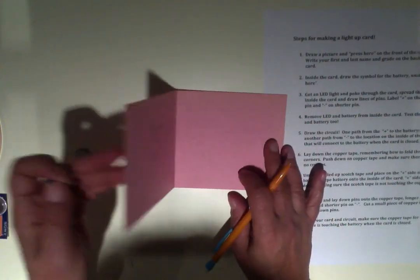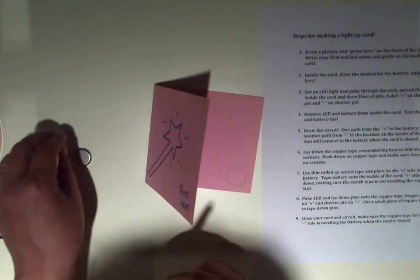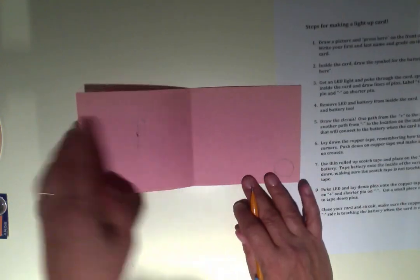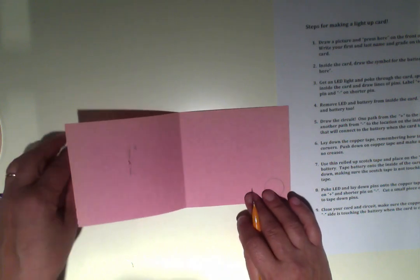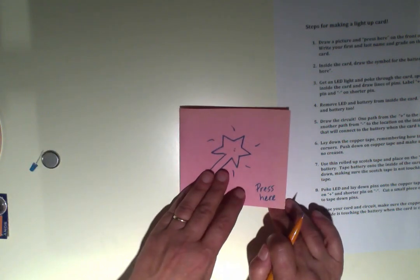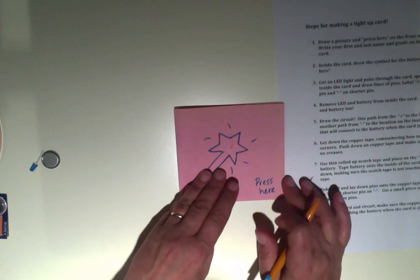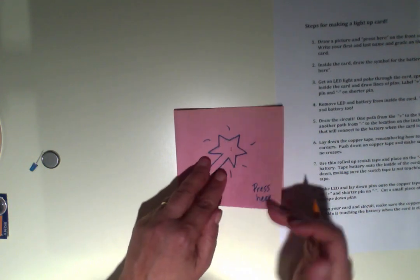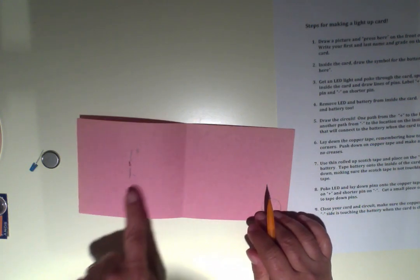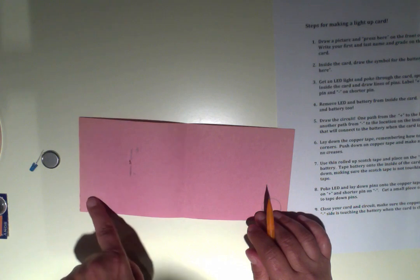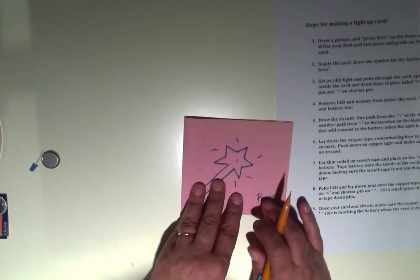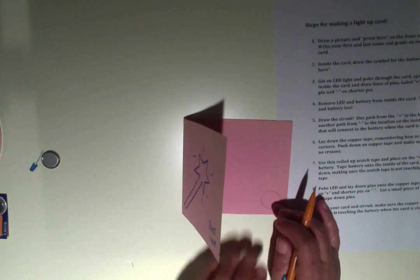Step three. Now we're going to draw out our circuit. When I close the card, I have to connect the circuit. So on this side, I'm going to have copper tape coming to the battery, and I'm also going to have copper tape on this side so that when I close the circuit, it will turn on.